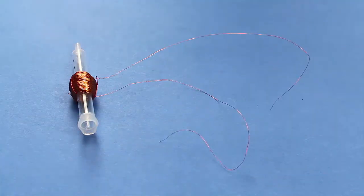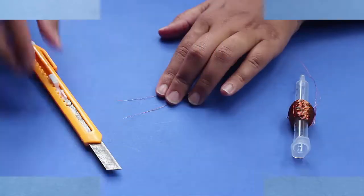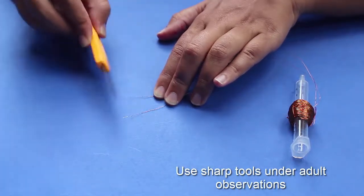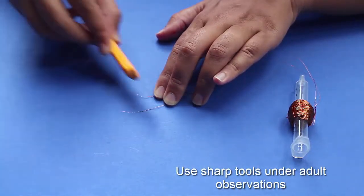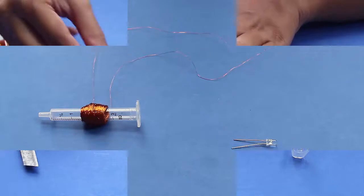Now remove the tucked part and your syringe will look like this. You will need to remove the insulation from the ends of the copper wire.